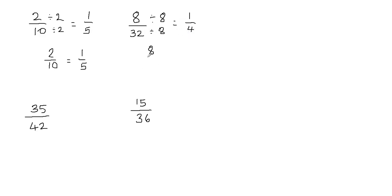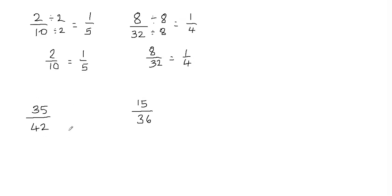So I can write that 8 over 32 is equal to 1 fourth. I know that I cannot reduce this fraction anymore because we cannot divide 1 and 4 by any other number other than 1. Now let's take a look at the next example. When you have larger numbers, it's hard to identify the greatest common factor.